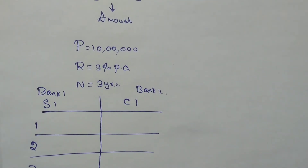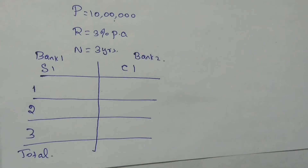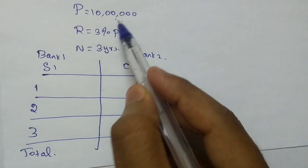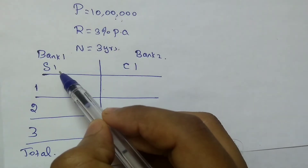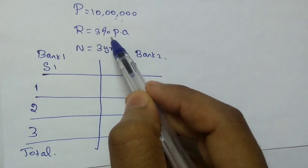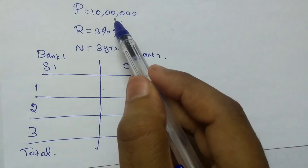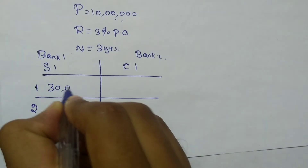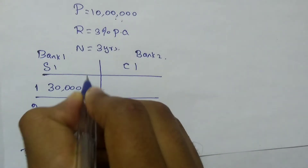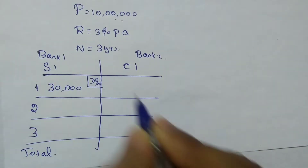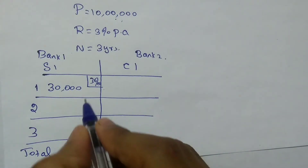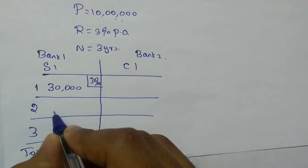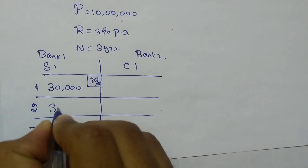You borrowed 10 lakh rupees from Bank One, which provides simple interest. Every year you have to pay 3%. So 3% of 10 lakh at the end of the first year is 30,000 rupees. Moving to the second year, once again you have to pay 30,000 rupees.